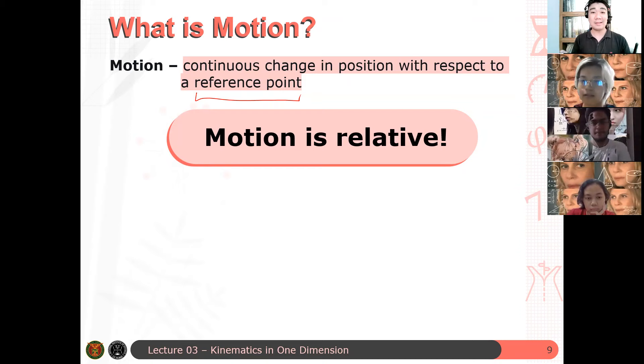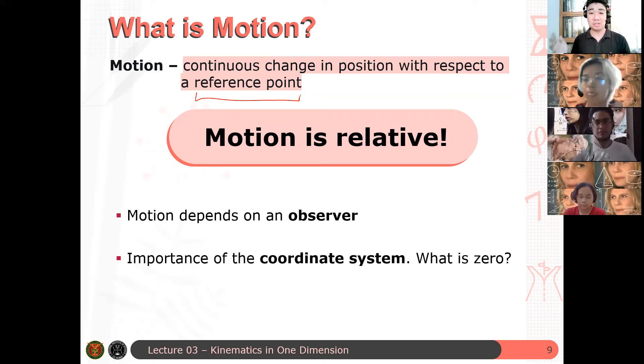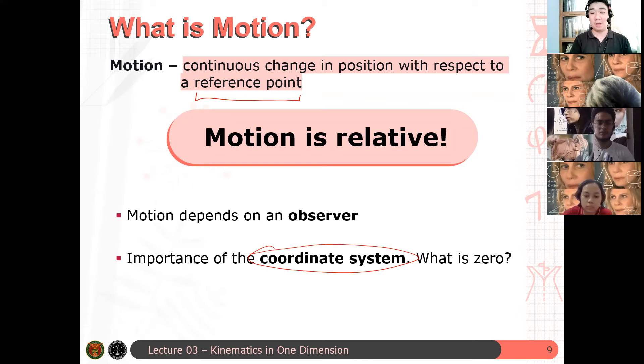In that case, the description of motion now becomes dependent on the observer, which is me. In that case, it's possible that in one condition, the car is moving. In the other condition, the car is at rest. So, in that case, depending on the observer, the description of motion might change. And you should be aware of that. Kaya, importante dito na, since motion depends on the observer, there should be a unified interpretation or a unified understanding of what your coordinate system is. This is the first step in solving a lot of problems in mechanics. You need to first set up your coordinate system. What is the origin of your coordinate system? And for that, you can define other physical quantities, like for example, position.